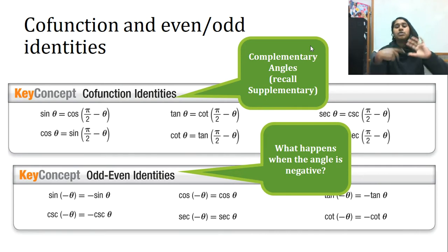And even odd is what happens when the angle is negative. In some of our functions, it's going to flip it over the x-axis. In some of our functions, it's going to stay the same. I should say the appropriate vocabulary word. It's going to reflect over the x-axis. So make sure you can recognize those and what they are.